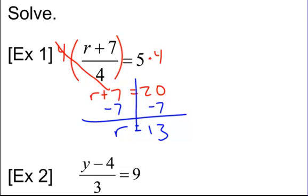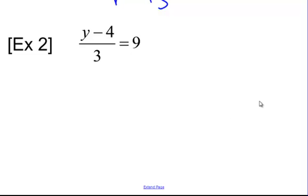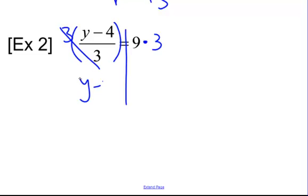Okay, welcome back. So we have y minus 4 divided by 3 equals 9. Let's get rid of that divided by 3. To get rid of that divided by 3, we multiply by 3. And whatever we do on this side of the equation, we have to do over here. So we multiply by 3. Those cancel. I'm just left with y minus 4, and then 9 times 3 is 27.